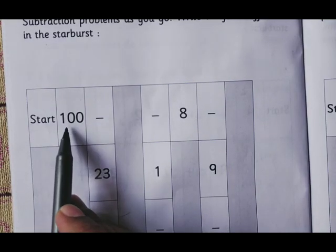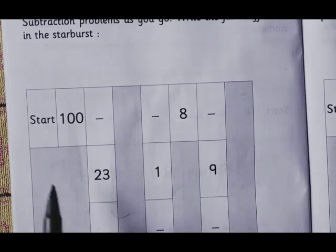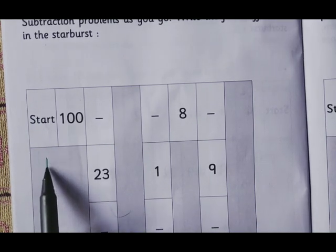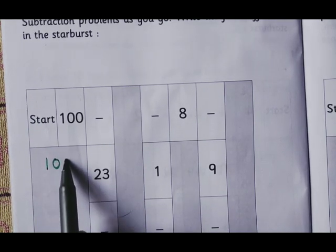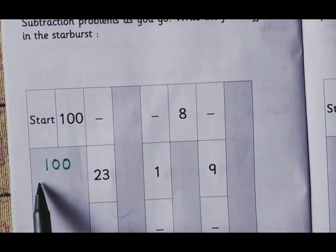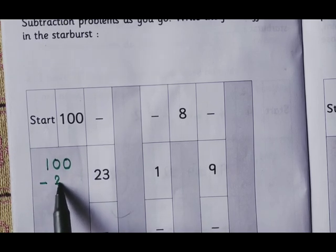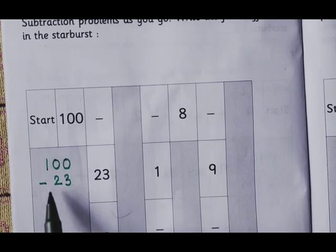Start. 100 minus 23. First you write the 100 here and then do the subtraction. If you do working, it will be good for you.